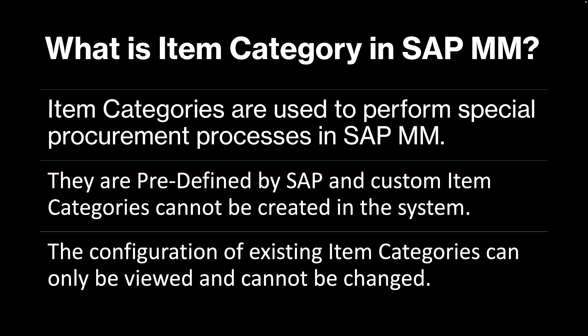So what is an item category? Basically, item categories in SAP MM are used to perform special procurement processes. There are certain predefined special procurement processes which SAP has provided. To do those special procurement processes, we need to use certain item categories in SAP MM. The item categories are predefined by SAP and we cannot create our own custom item categories in SAP MM, in contrast to SAP SD where we can create our own custom item categories.